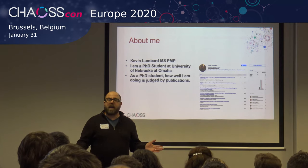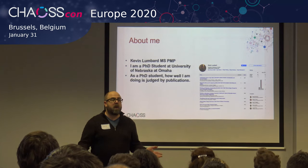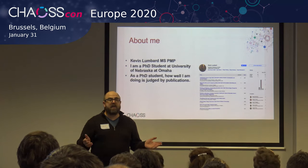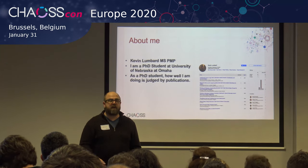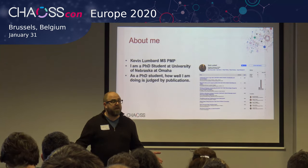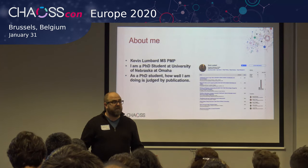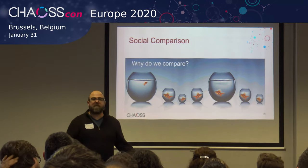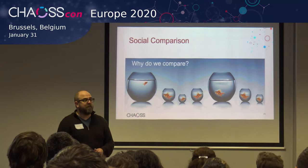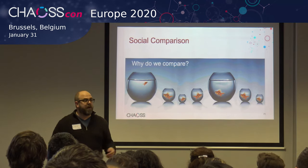So how do I know how many publications I need? How do I know what quality those publications need to be? One way to do that is to actually look at my peers. We call that social comparison. Social comparison is part of your nature — we assess who we are by looking at our peers, the people around us.